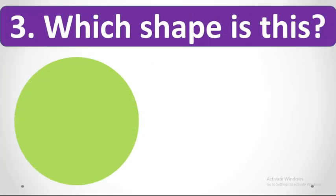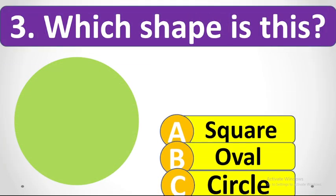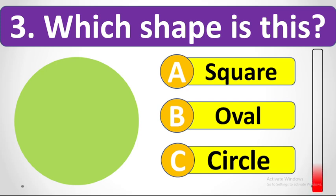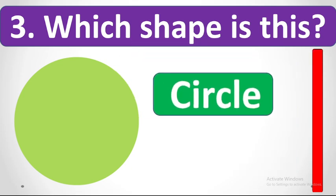Which shape is this? The options are square, oval, or circle. Your time starts now. It's a circle.